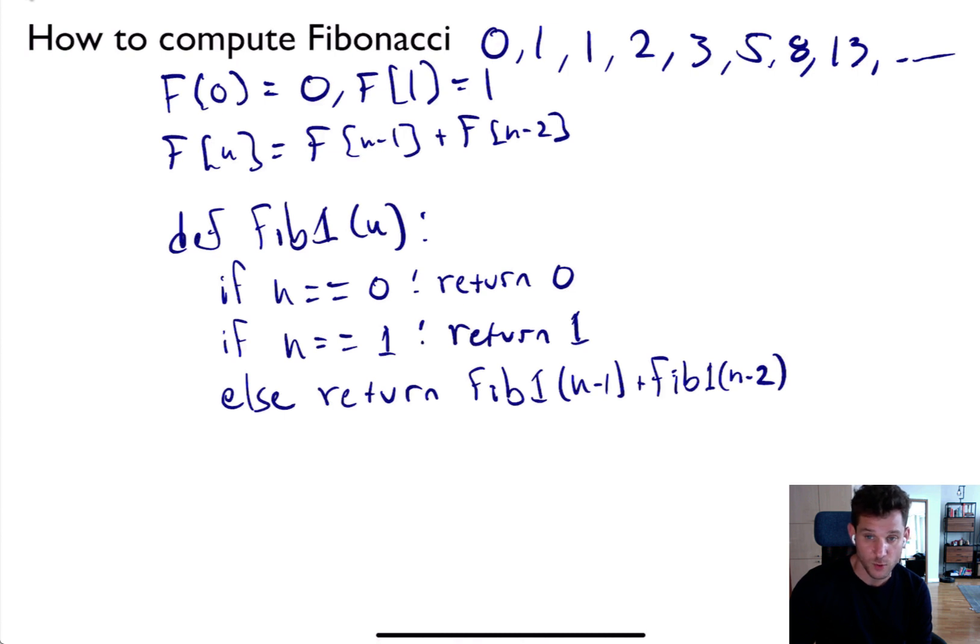Here's my pseudocode. Notice the first line checks if n equals zero, one of the base cases, in which case it just returns zero. Then it checks if n equals one, in which case it returns one. Otherwise, it's going to return Fib(n-1) + Fib(n-2). Notice it makes two recursive calls to Fib1 to compute this. And it's very natural given the above formula that we would do this.